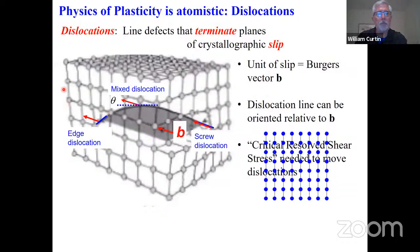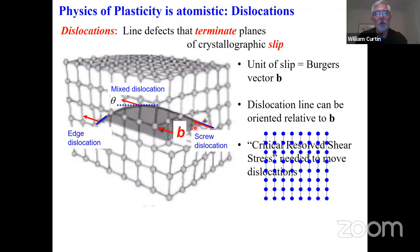The line is characterized by the amount of slip, the Burgers vector, which is associated with crystallography. The line could be oriented along the Burgers vector—that's a screw dislocation—or perpendicular to the Burgers vector—that's an edge dislocation—or anything in between. It's a singular line between slipped and unslipped. If you push on a material, it deforms by forming a dislocation—this extra plane of atoms is the termination of slip—and then plastic flow is this slip moving through the material until you get permanent plastic deformation.